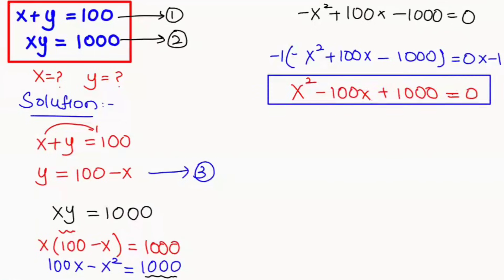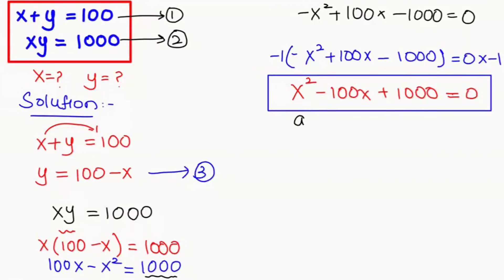After multiplying through by negative one, we get x squared minus 100x plus 1000 equals 0. Here we get the quadratic equation. This is our a value, and these are our b and c values. Now we're going to plug in all the a, b, c values into the quadratic formula.